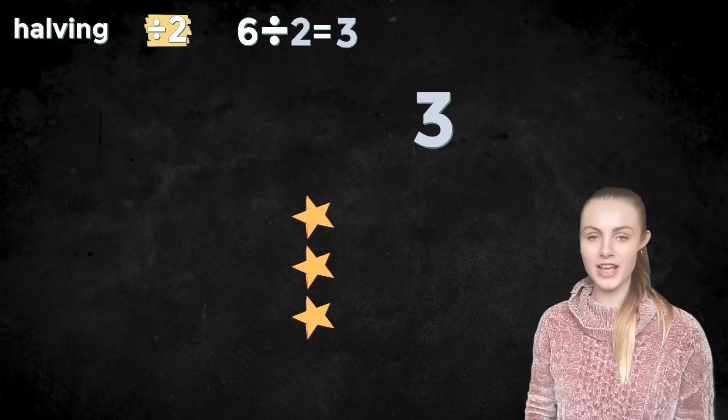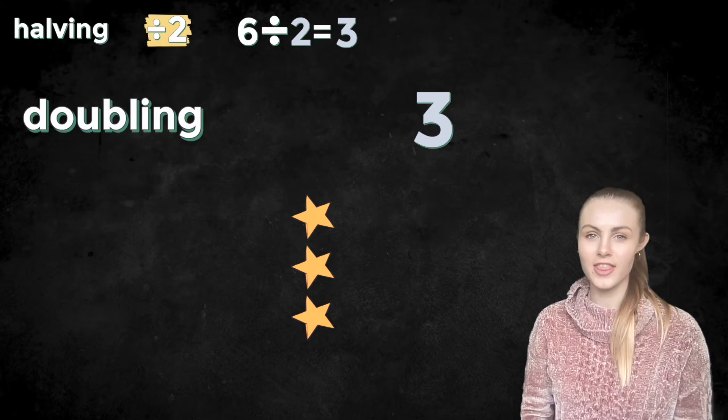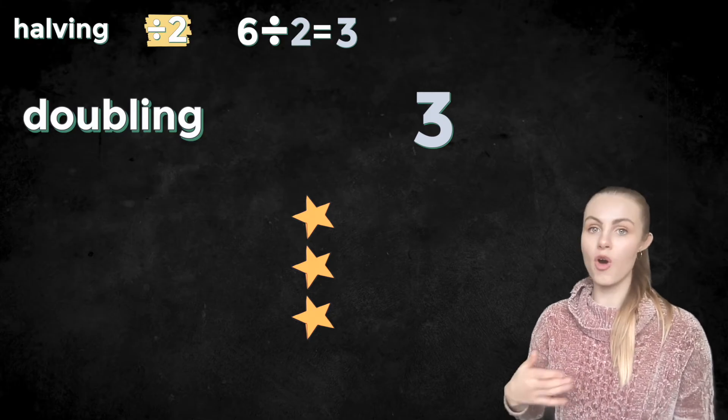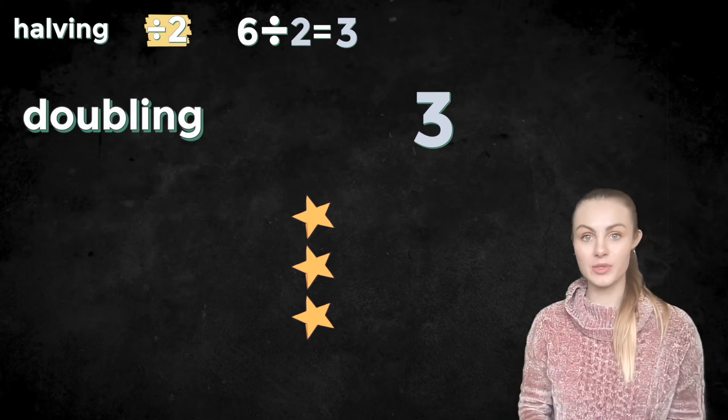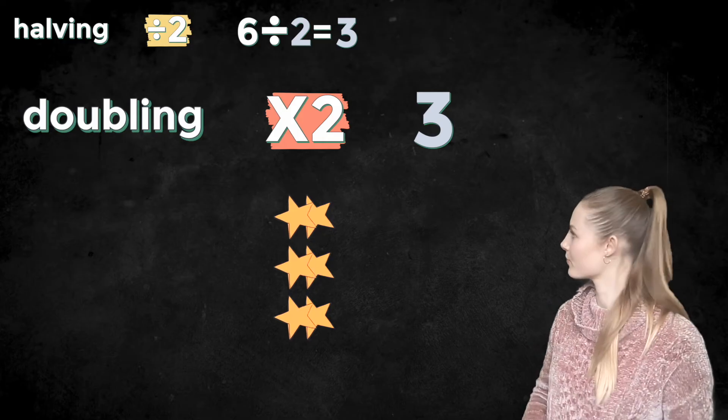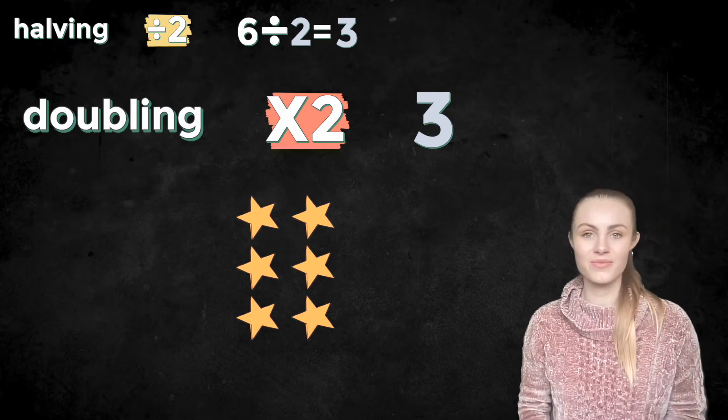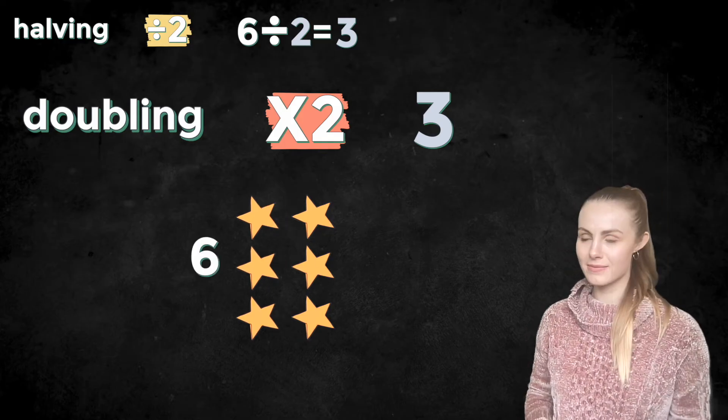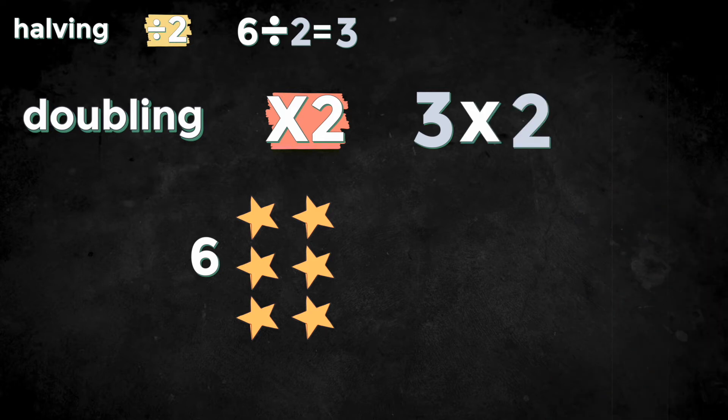Let's stick with the number three and this time we're going to double it. That means I need two lots of three, which I know is the same as multiplying by two. Now I've got six. So three times two is six. That means that double three is six.